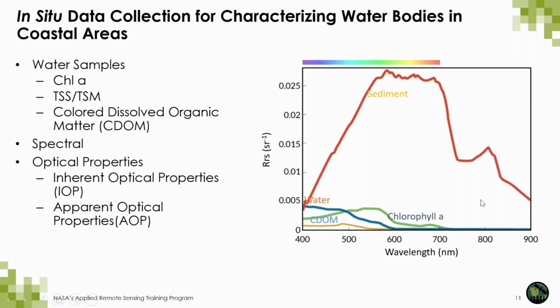In the figure here, you can see how sediments strongly absorb in the yellow and red region of the spectrum, whereas chlorophyll reflects in the green. We're going to discuss inherent and apparent optical properties in the next slide.